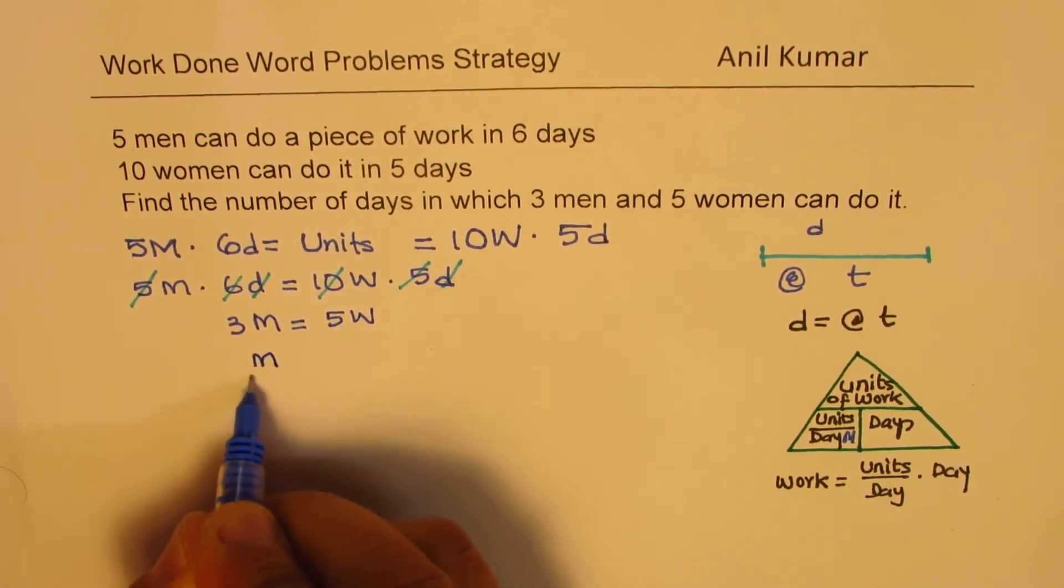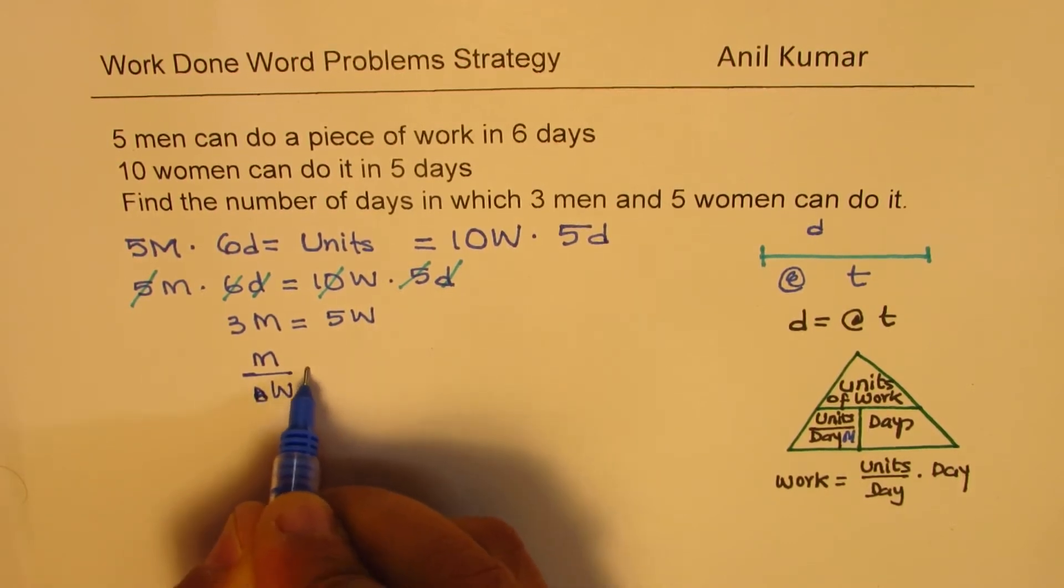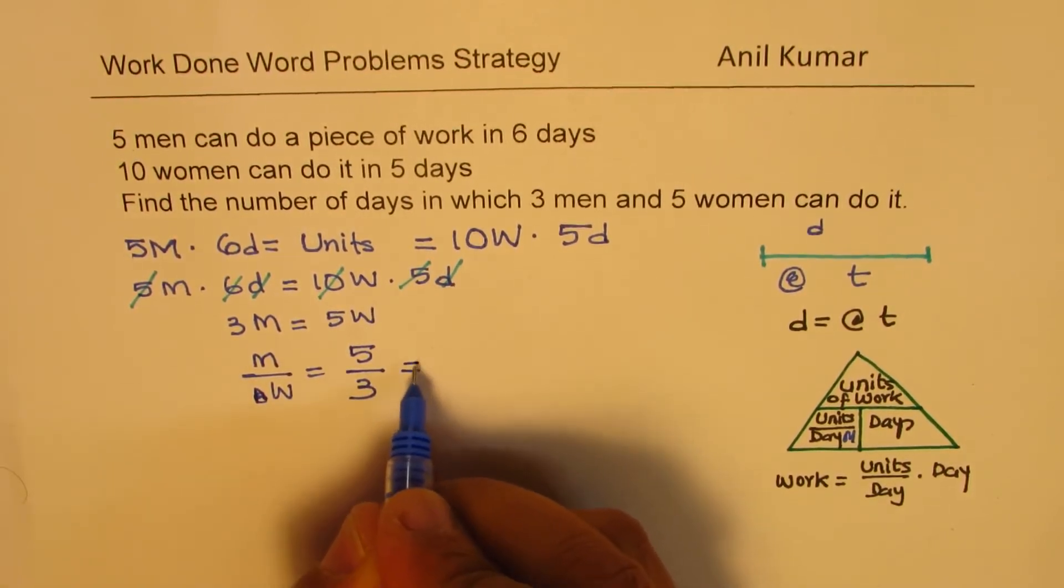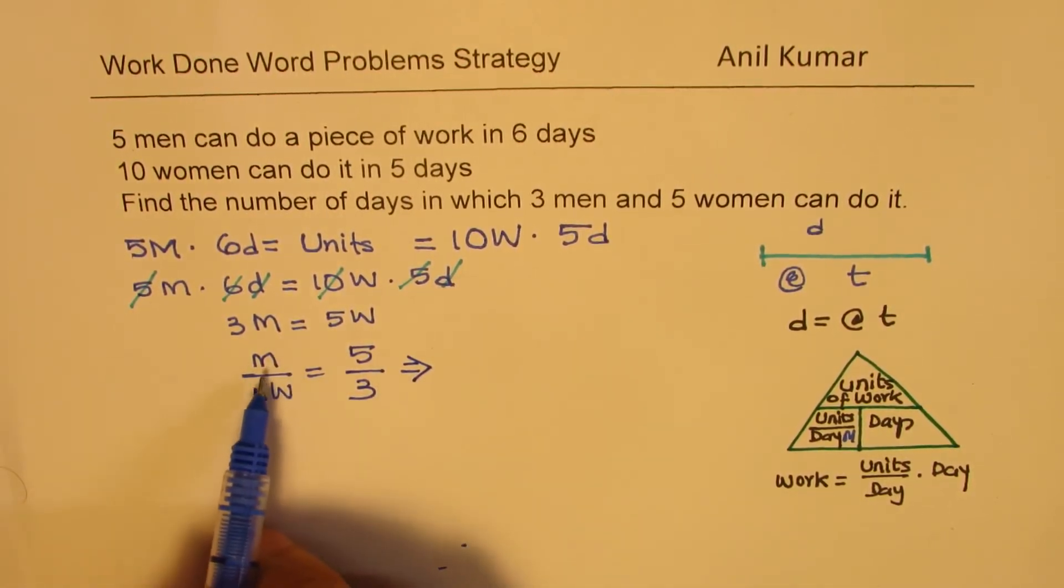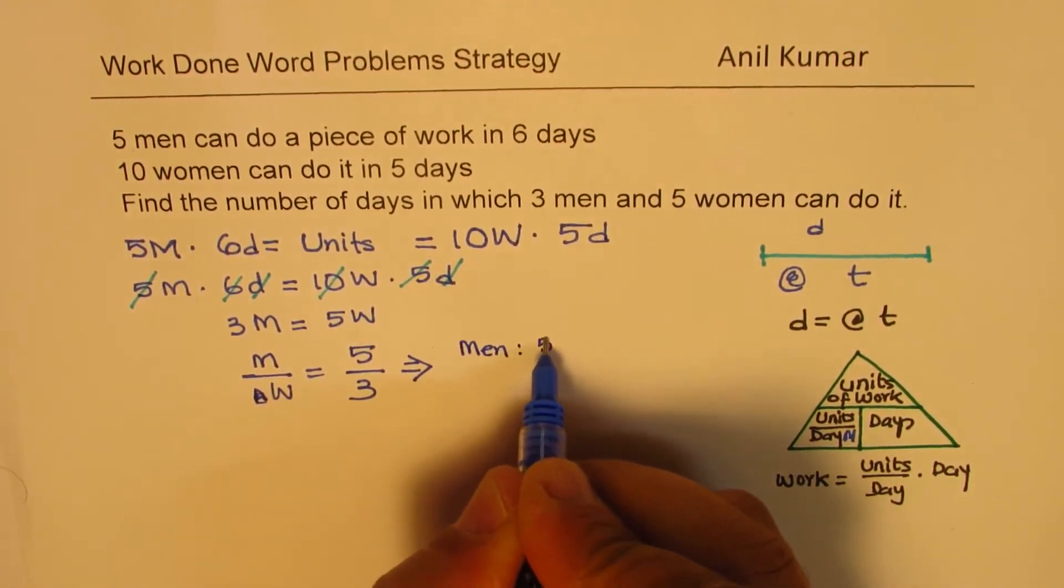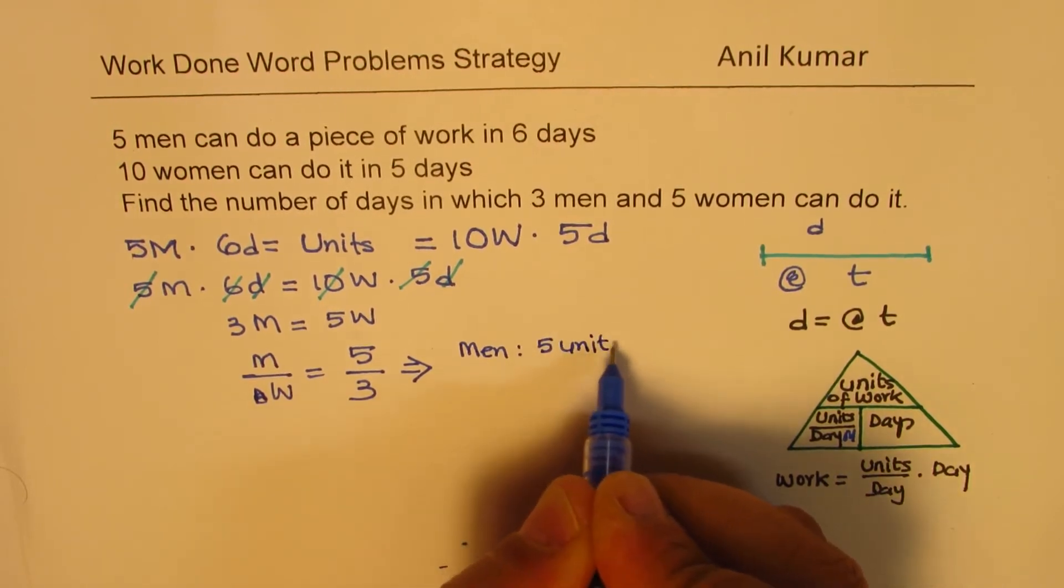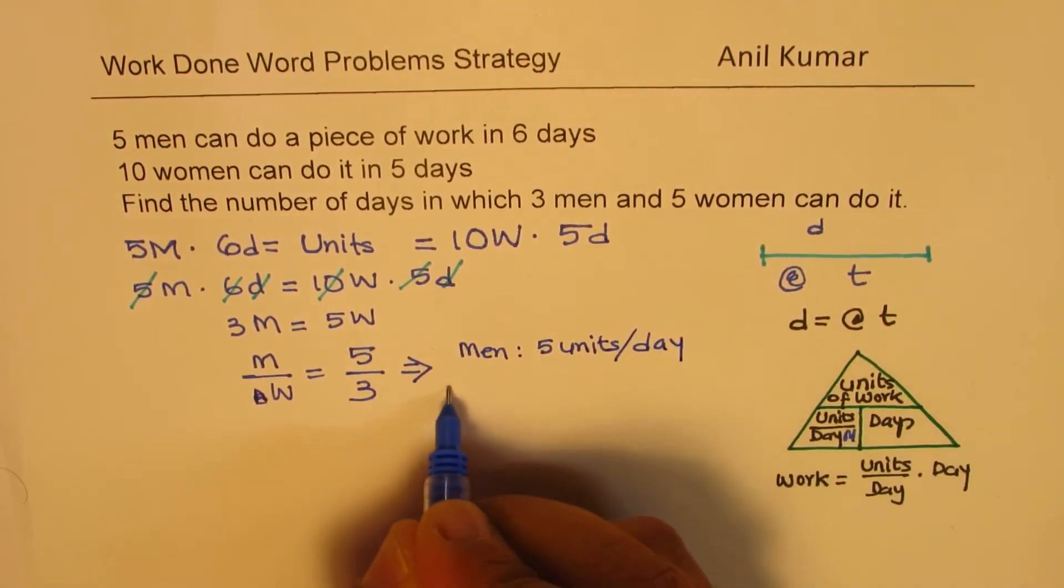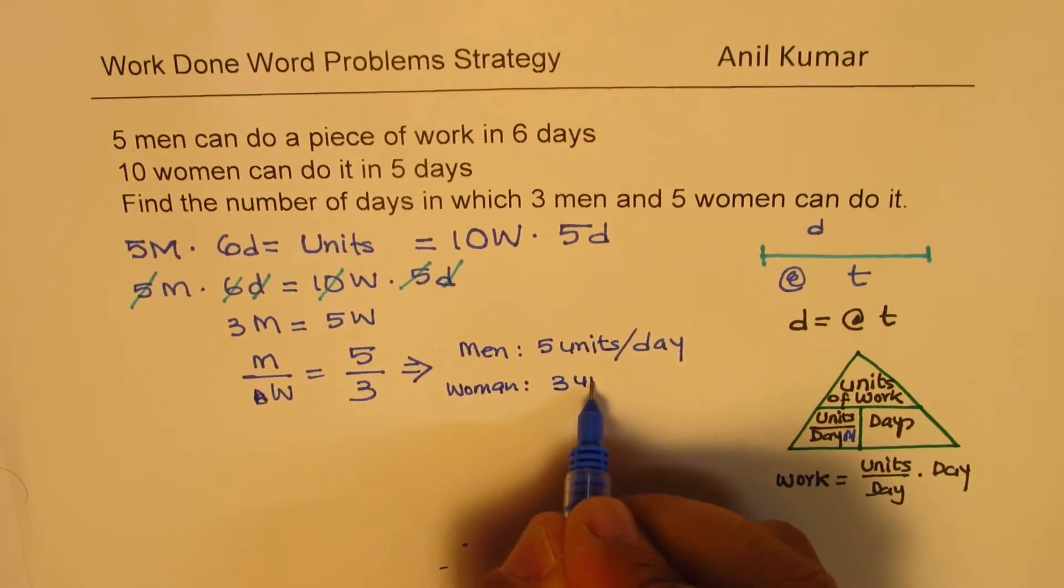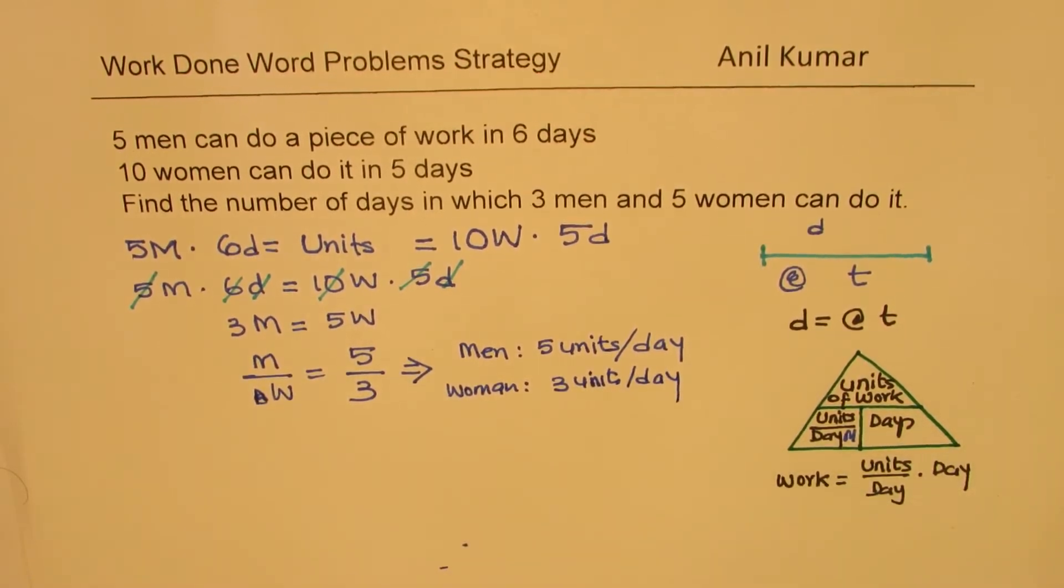That is what this question is saying. So, we can actually write it as a ratio. I prefer to write it like this: Men over women. So, if I do that, I get five over three. So, this basically implies that the rate for men is five units per day. For men, it is five units per day. And for women, is three units per day. So, that becomes their rate. So, from here, we found the rate.